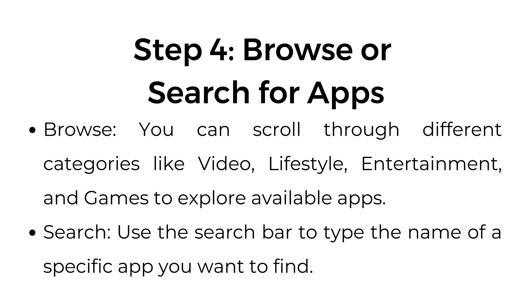Step number four, browse or search for apps. You can scroll through different categories like video, lifestyle, entertainment, and games to explore available apps. You can also use the search bar to type the name of a specific app you want to find.